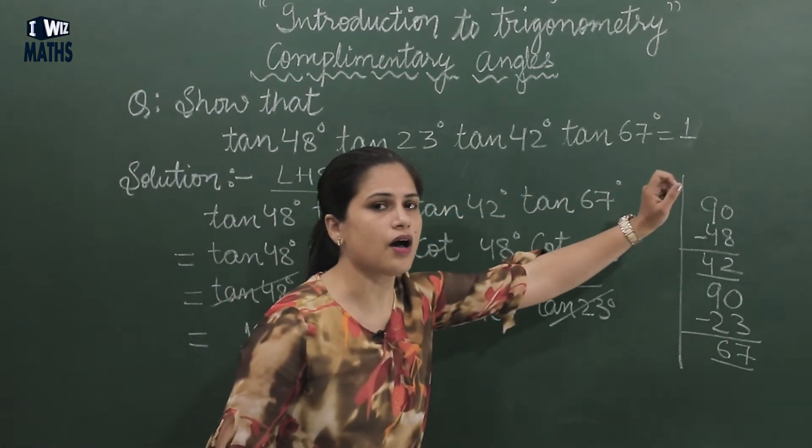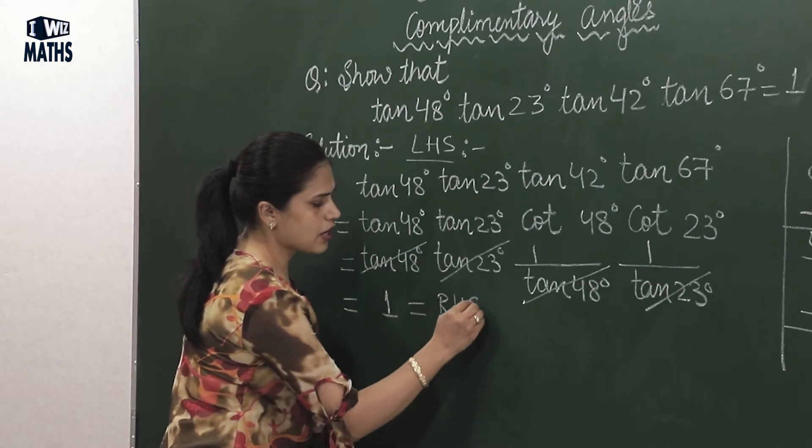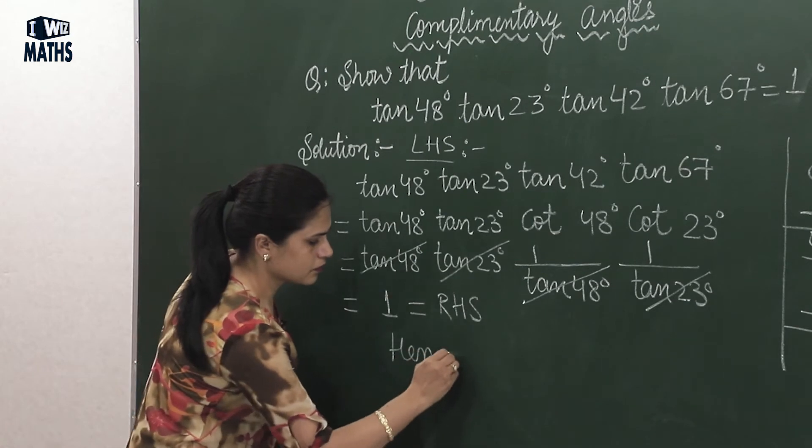And this one is our RHS. So here we can write this equals RHS. This is proved. So according to the question we can say, shown.